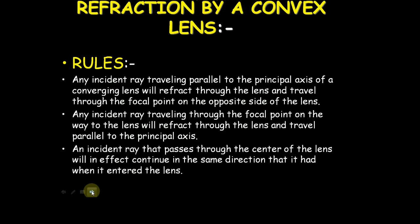Refraction by a convex lens. You will identify and you should must and should know the rules. Any incident ray traveling parallel to the principal axis of a converging lens will refract through the lens and travel through the focal point on the opposite side of the lens.